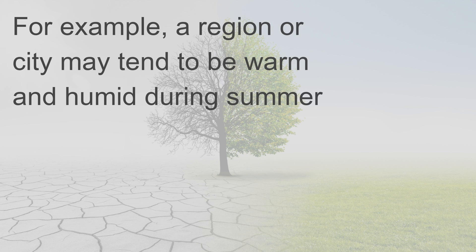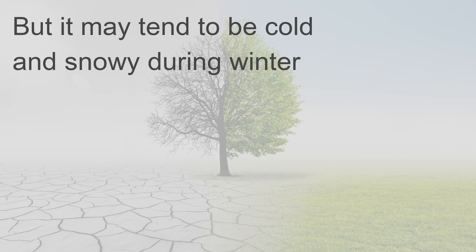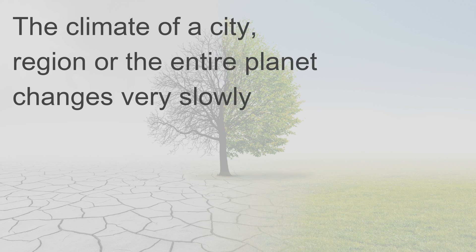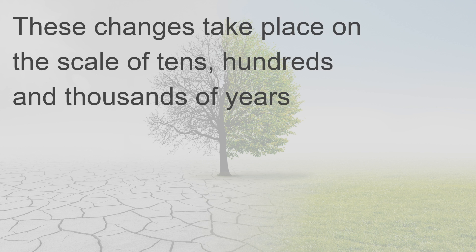For example, a region or city may tend to be warm and humid during summer, but cold and snowy during winter. The climate of a city, region, or the entire planet changes very slowly — these changes take place on the scale of tens, hundreds, and thousands of years.